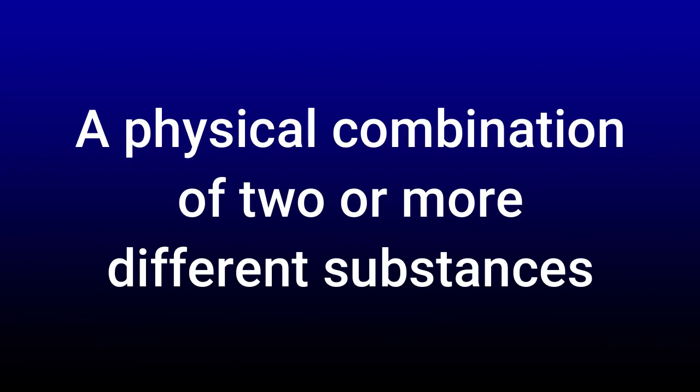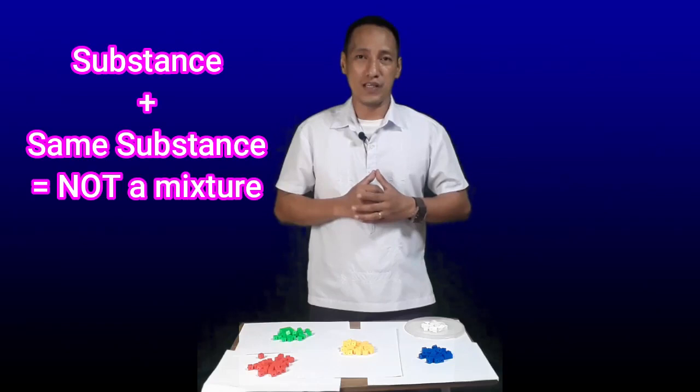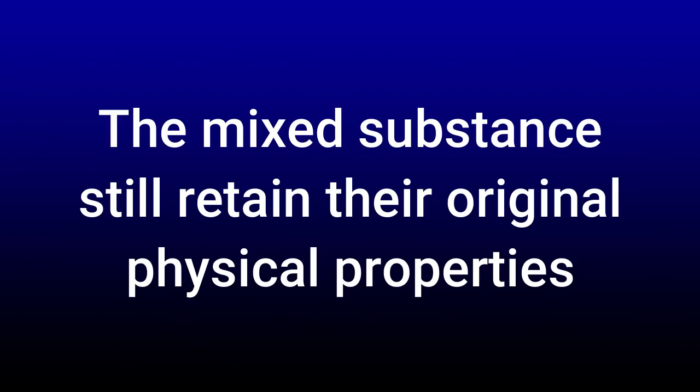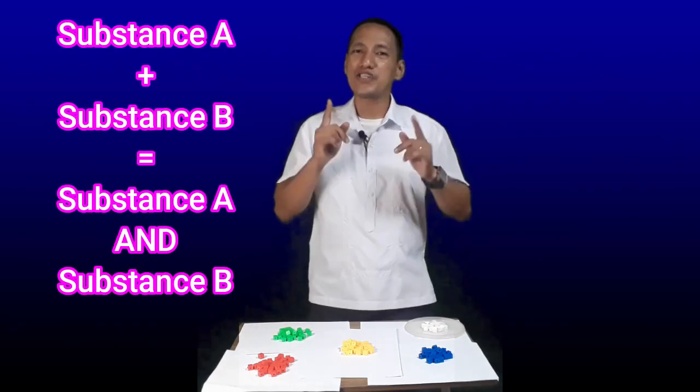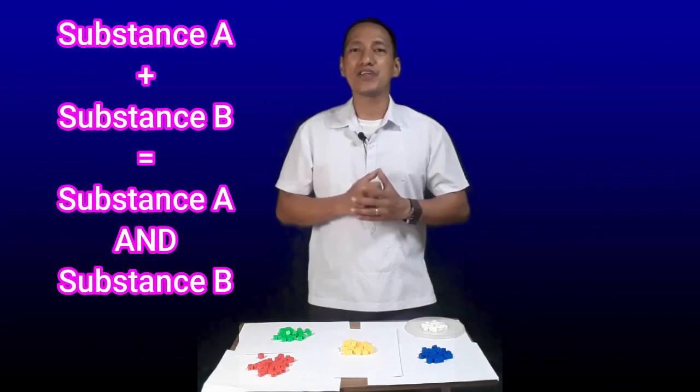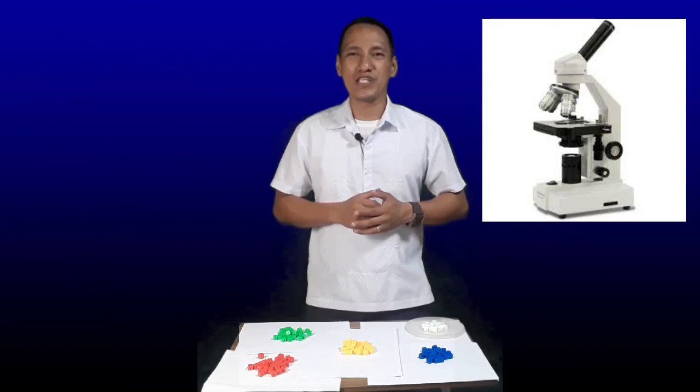A physical combination of two or more different substances — take note, different substances. So if you are mixing together a number of the same type of substances, then you are not making a mixture. These substances still retain their physical properties. It means that when you mix these different substances together, each substance now in the mixture is still the same substance. You may still be able to see them with your naked eye, or maybe they became too small that you need to use a microscope. But they are still the same even when mixed together with other substances.